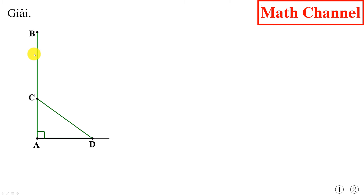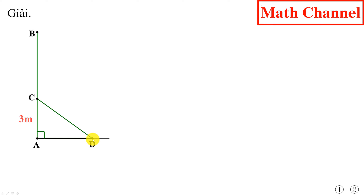Ở hình mới này chúng ta ký hiệu chiều cao của cây xanh là đoạn AB. Cây xanh này bị gãy, chỗ gãy là điểm C. Ngọn cây chạm mặt đất tại điểm D. Bài toán cho số liệu: từ chỗ gãy cách gốc cây 3m, từ chỗ ngọn cây chạm mặt đất cách gốc cây là 4m. Đề yêu cầu chúng ta tính chiều cao của cây xanh.